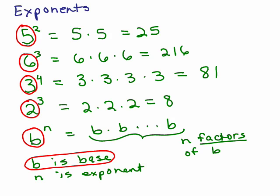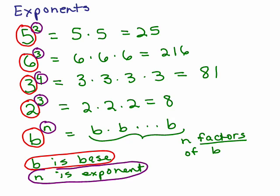The other number, the exponent, tells you how many of those are multiplied together. So the exponent for each of these, I'm circling. So for instance, for the first 5 squared, when I say n factors of b, I mean 2 factors of 5. Factors means the things being multiplied together.